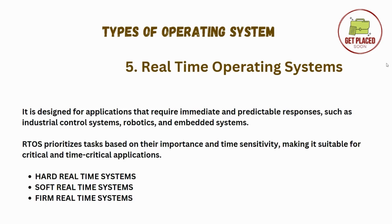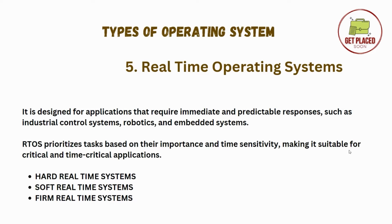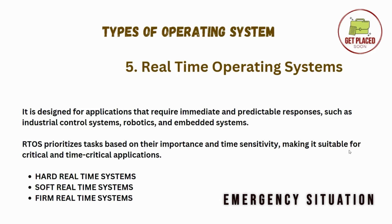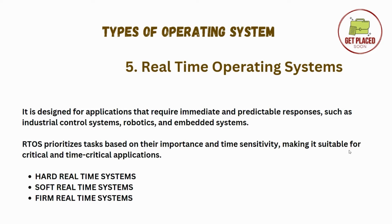Moving ahead, we have real-time operating system. Real-time operating systems are systems with deadlines. RTOS is designed for applications that require immediate response — so for emergency situations. For example, RTOS is used in vehicles in emergency situations like controlling the engine, airbag deployment, etc. RTOS prioritizes tasks based on importance and time sensitivity.